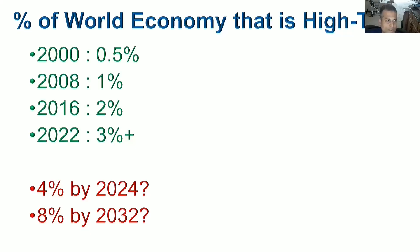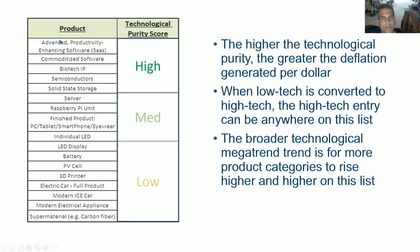How do I come to these numbers? What portion of the economy comprises products and services that meet that high tech threshold? Here's a selection of high tech, borderline high tech, and some non-high-tech products, ranked from highest to lowest. I categorize them as high, medium, and low technological purity. High means the ones most rapidly advancing, generating the most deflation.